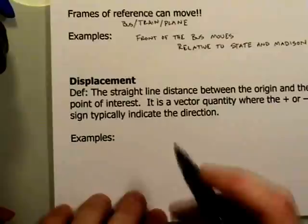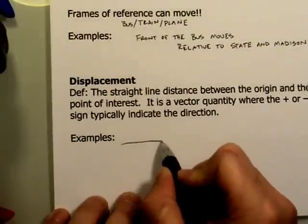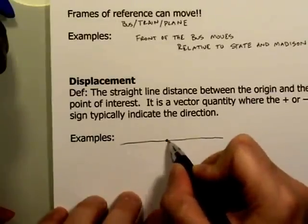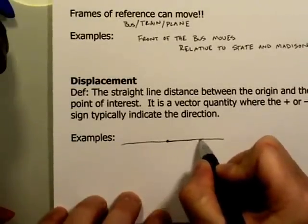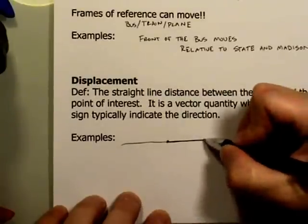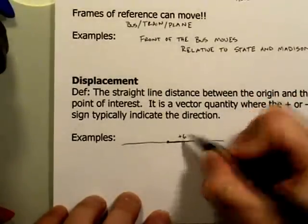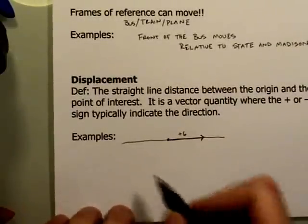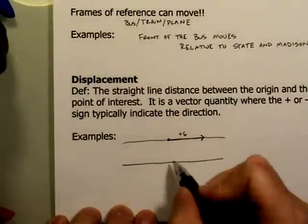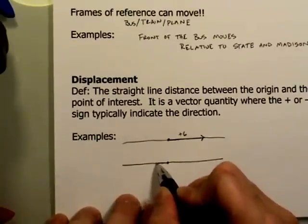To give an idea of displacement, imagine a number line with an origin. We might have a positive vector — for example, a displacement of plus 6 on this number line. As noted, vectors do not have to be positive; they might also be negative.